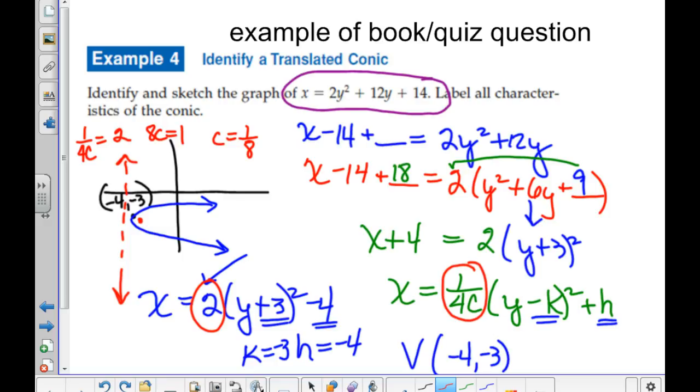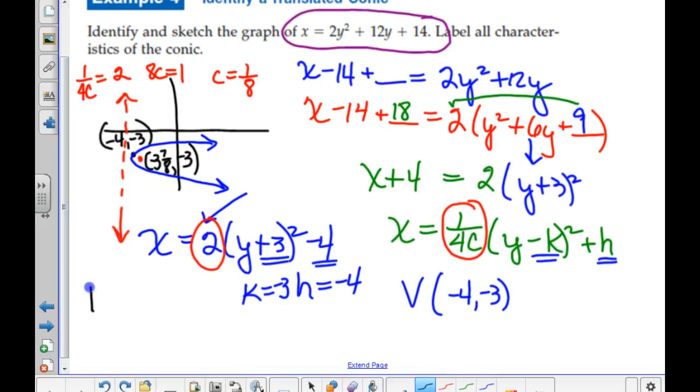1 over 4C is equal to what? 2. So 1 over 4C equals 2, which means 8C equals 1, C equals 1 eighth. 1 eighth of a unit this way, and 1 eighth of a unit back this way. Again, there's formulas for it on your sheet. My thinking is, instead of going all the way left to negative 4, I'm going left to negative 3 and 7 eighths, and down 3. So a better way to write that focus would be negative 31 eighths.